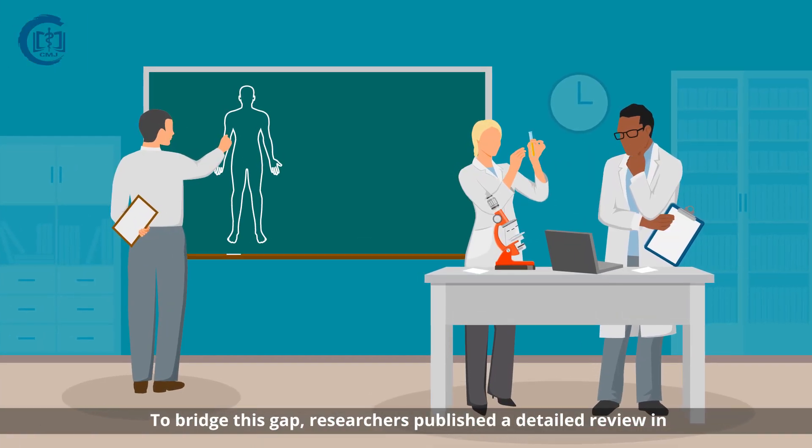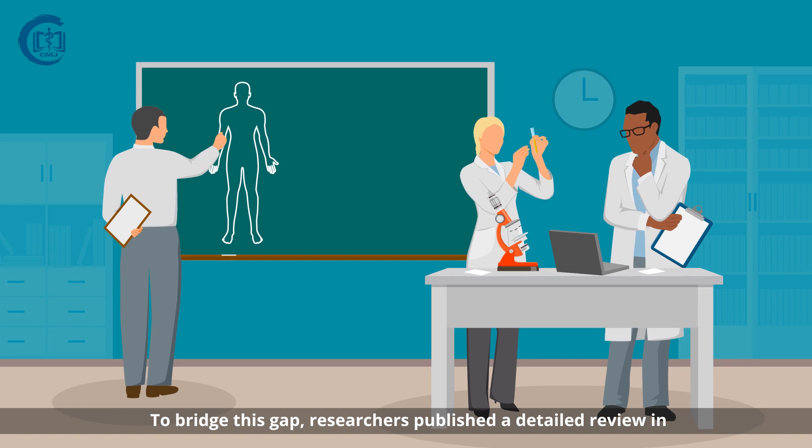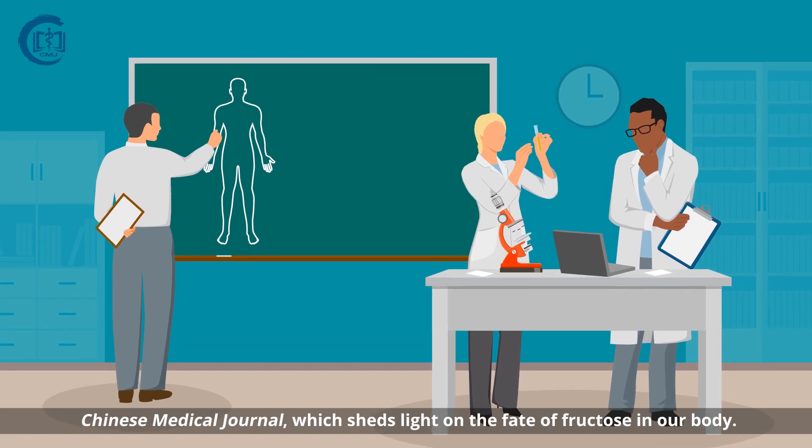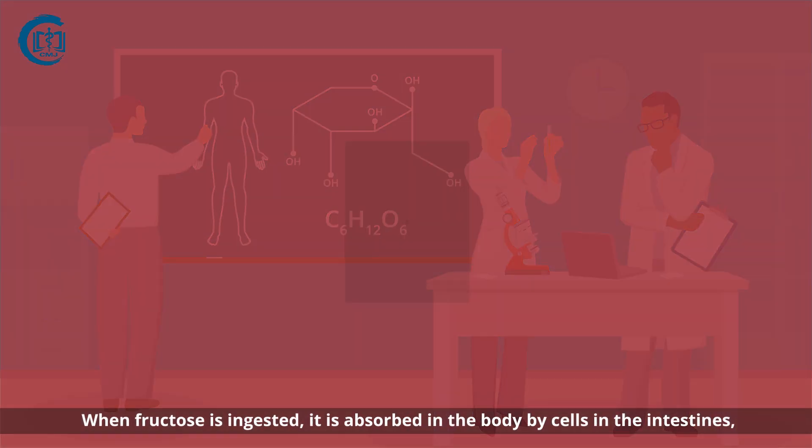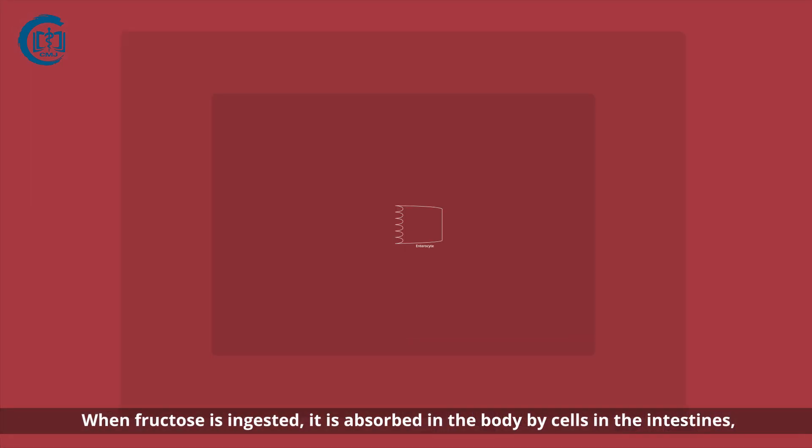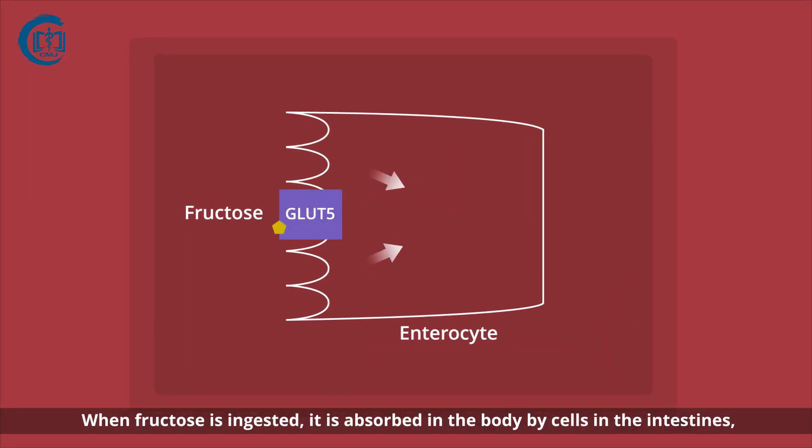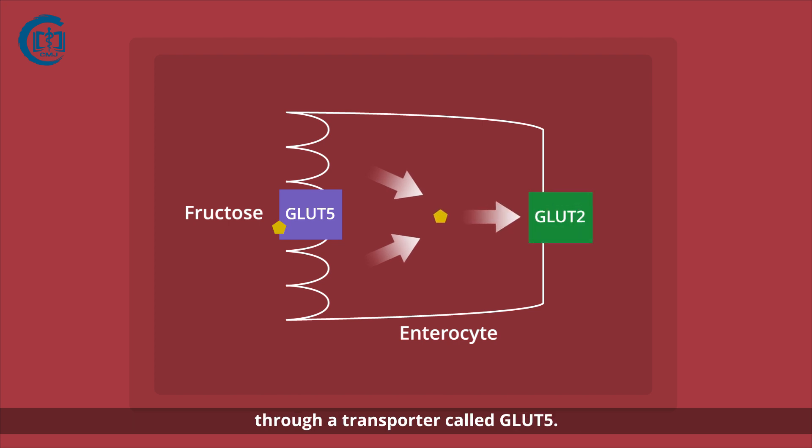To bridge this gap, researchers published a detailed review in Chinese Medical Journal, which sheds light on the fate of fructose in our body. When fructose is ingested, it is absorbed in the body by cells in the intestines through a transporter called GLUT5.